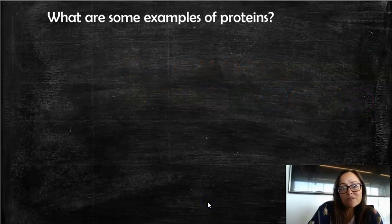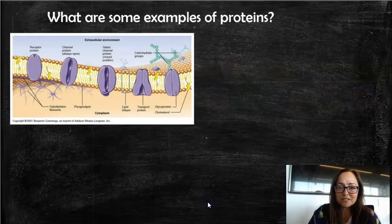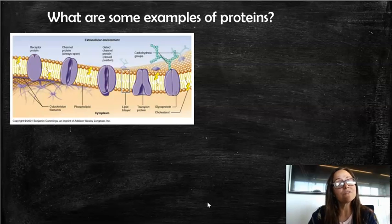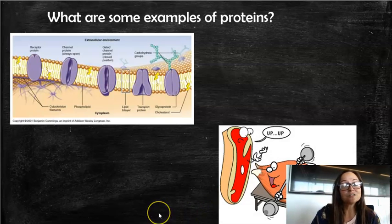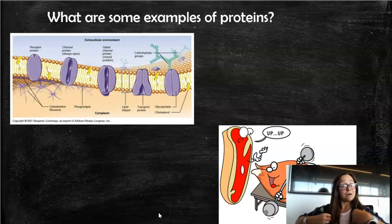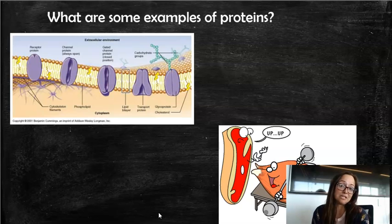So when we talk about proteins, what are some examples of proteins in our lives? Well, we have lots of different kinds of proteins in our cell membranes. We also have proteins when we talk about our muscles and building up muscle fibers. Those are actually proteins.